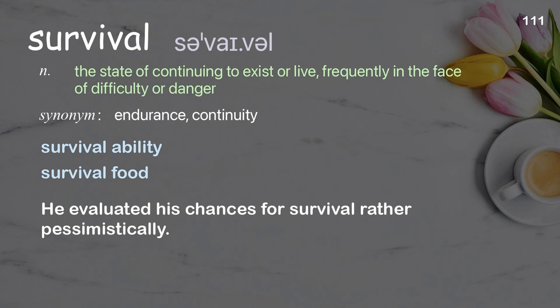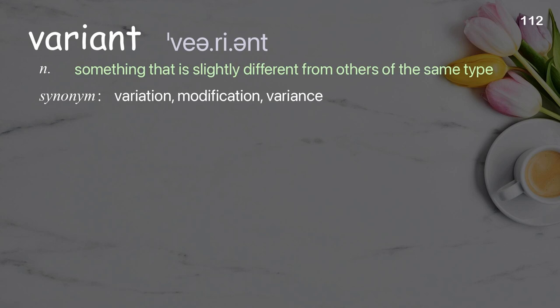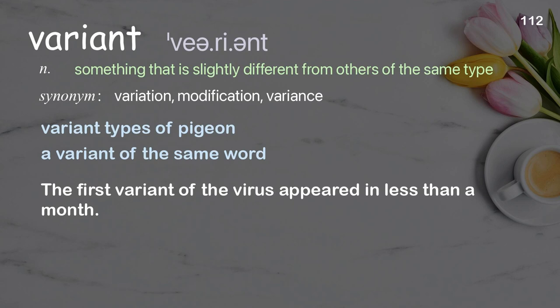Variant: something that is slightly different from others of the same type. Examples: variant types of pigeon, a variant of the same word. The first variant of the virus appeared in less than a month.